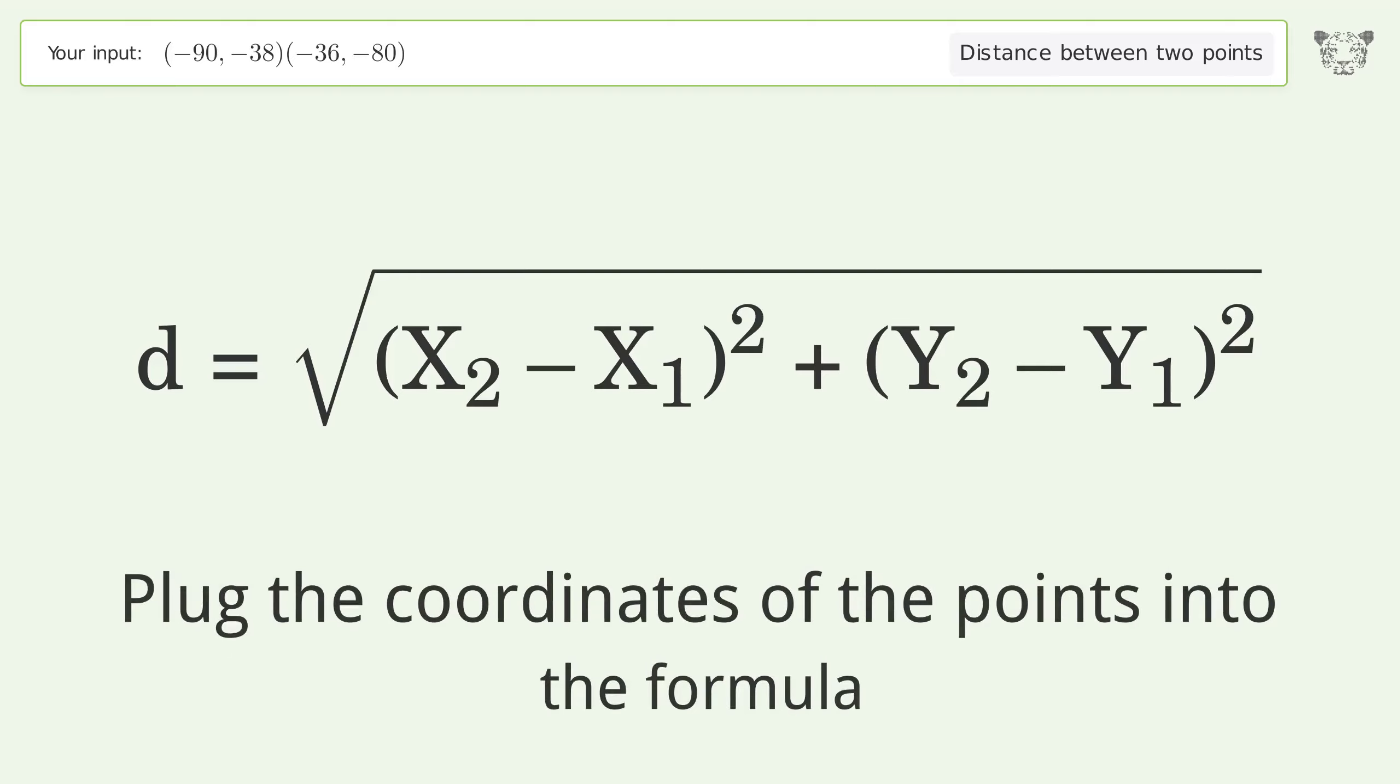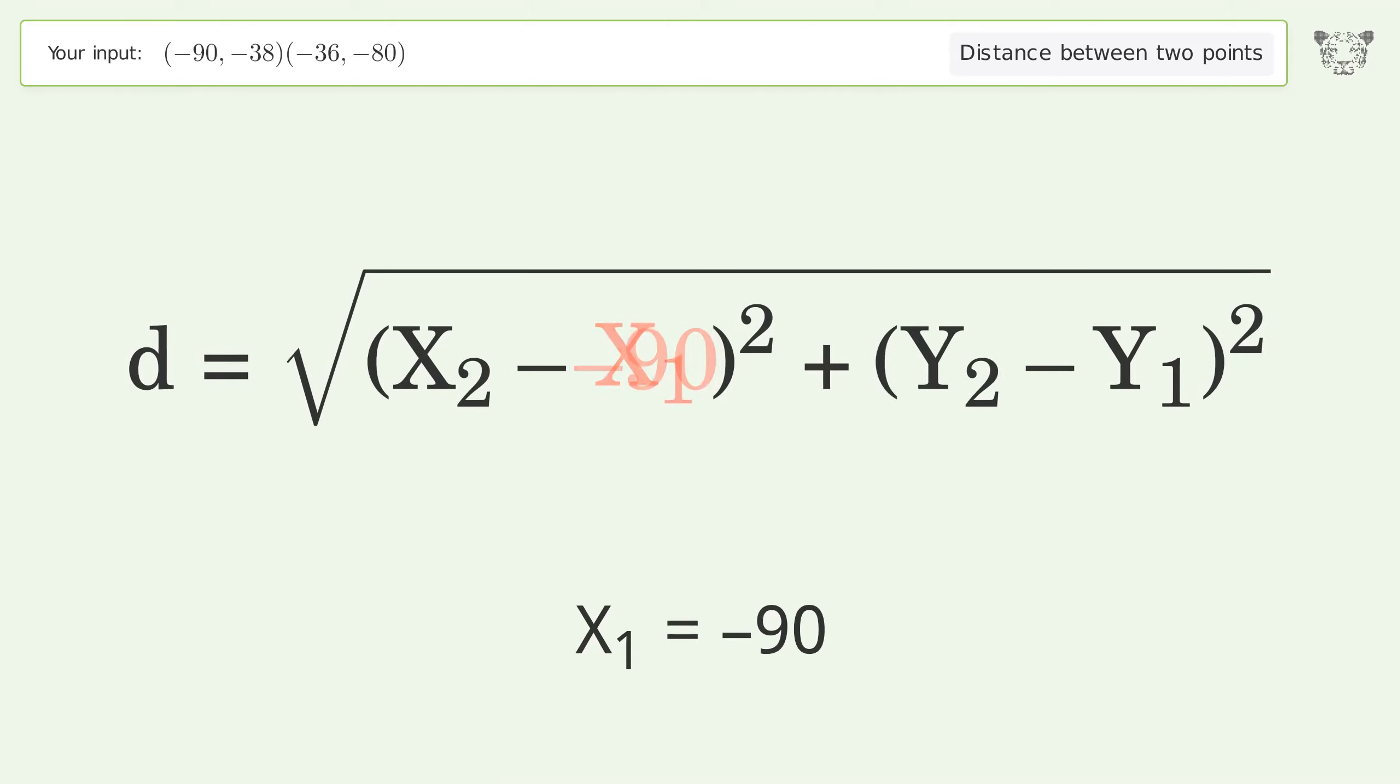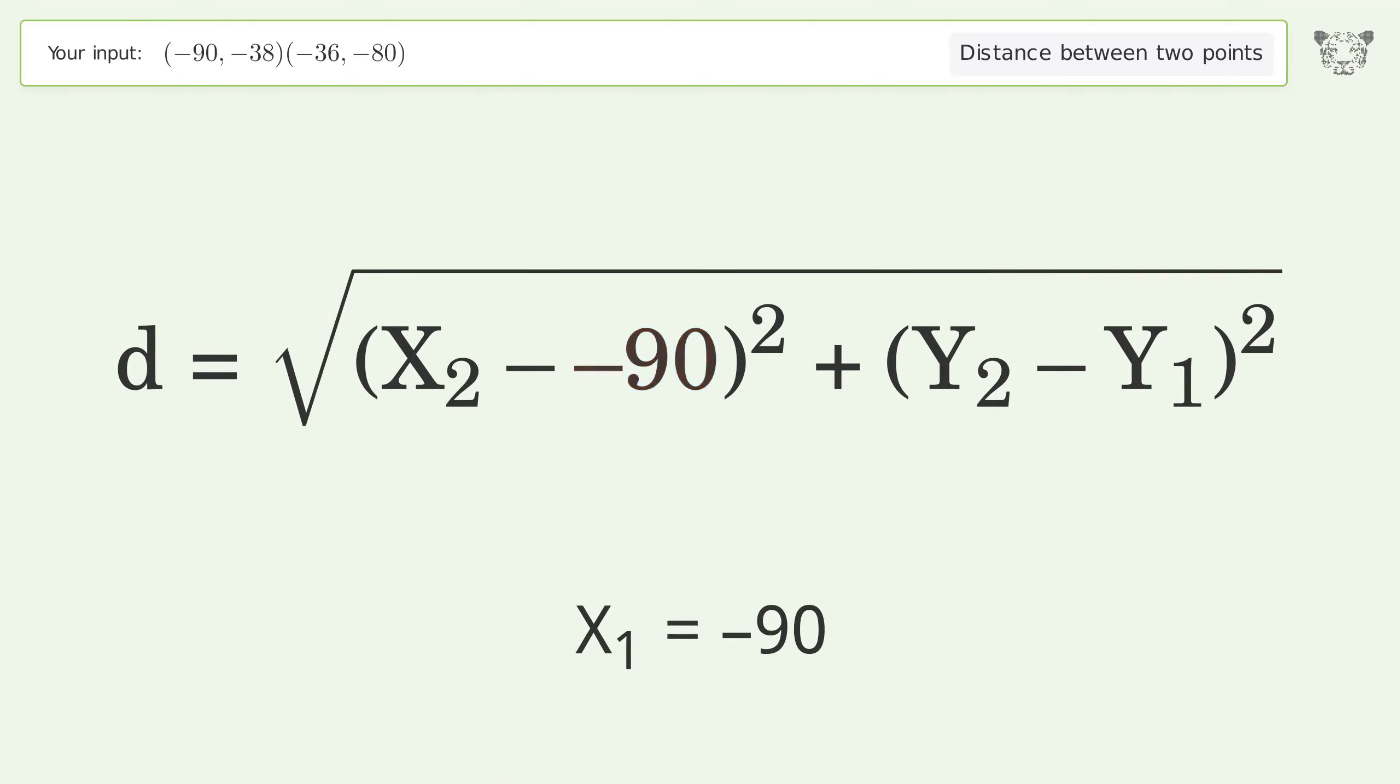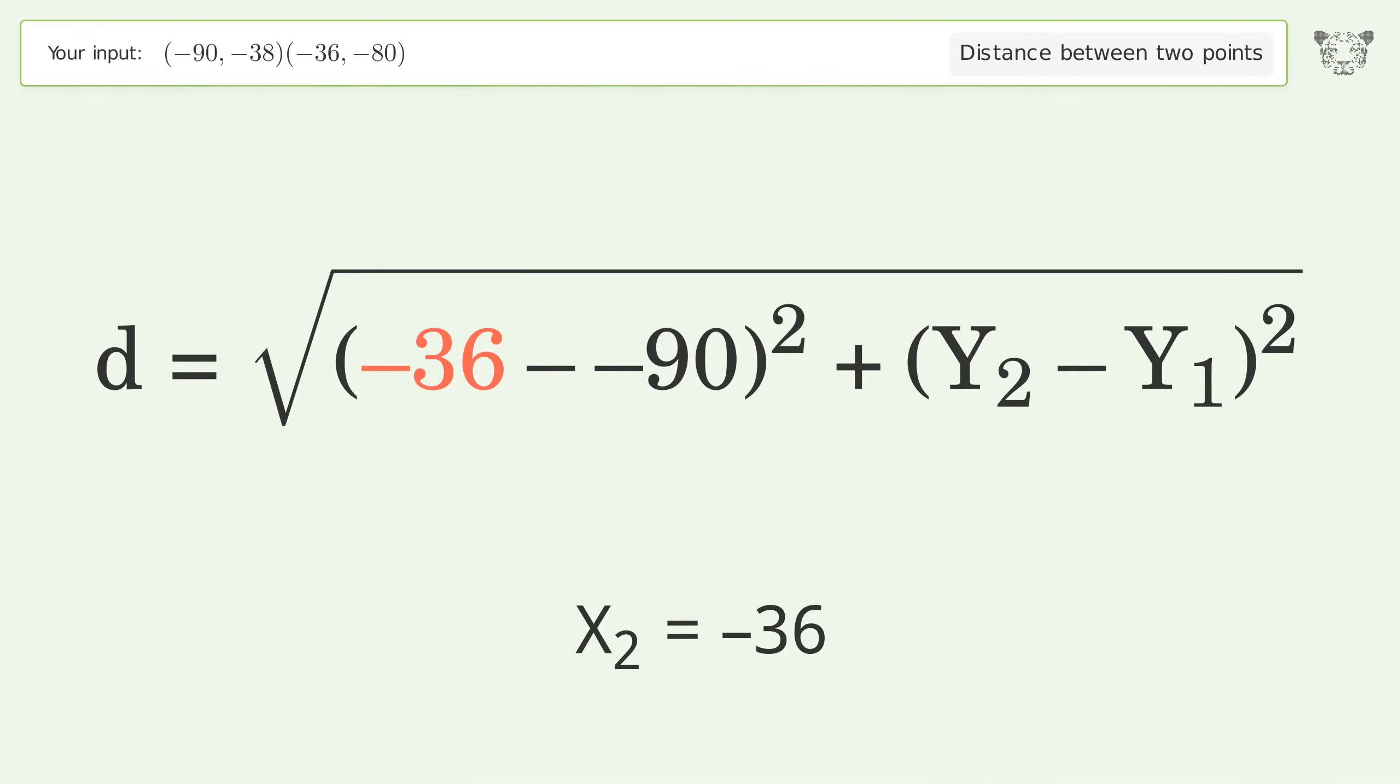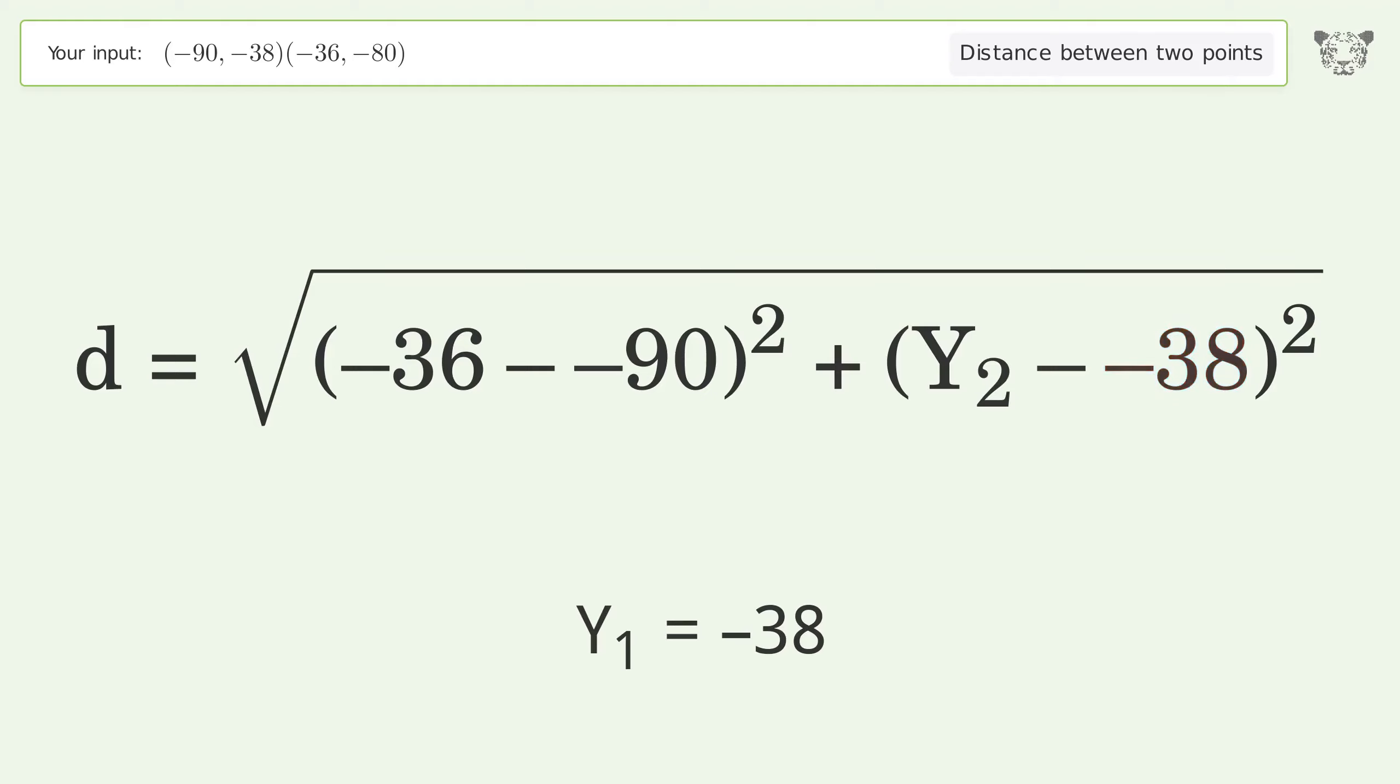Plug the coordinates of the points into the formula: x1 equals negative 90, x2 equals negative 36, y1 equals negative 38, y2 equals negative 80.